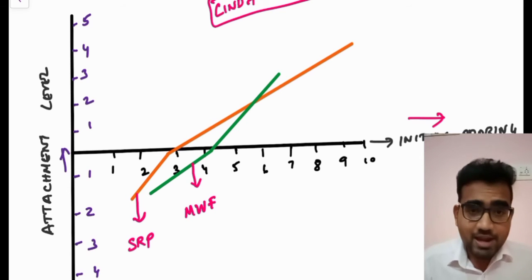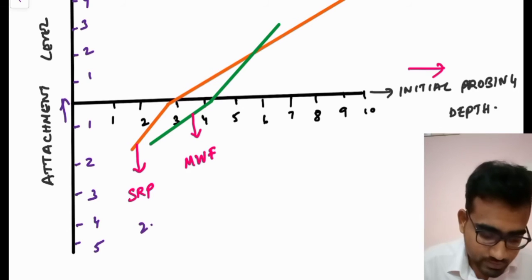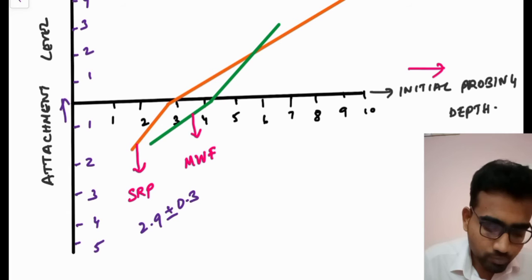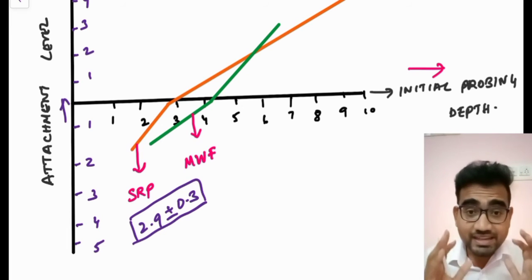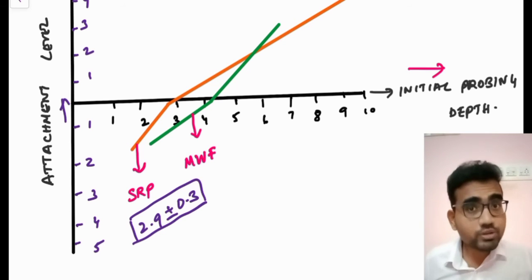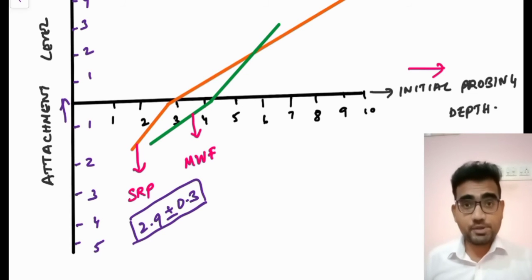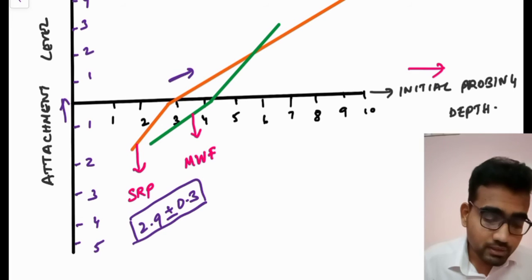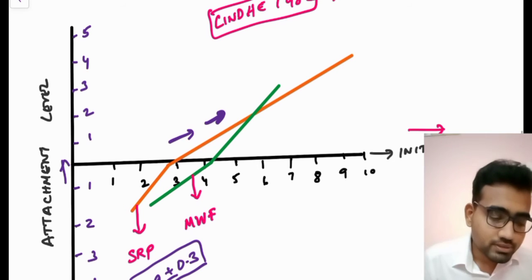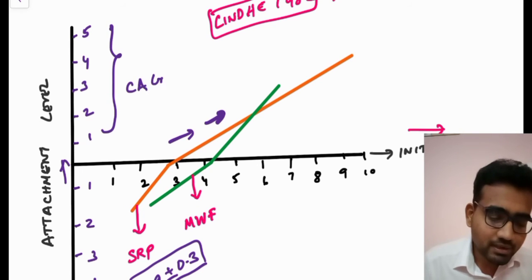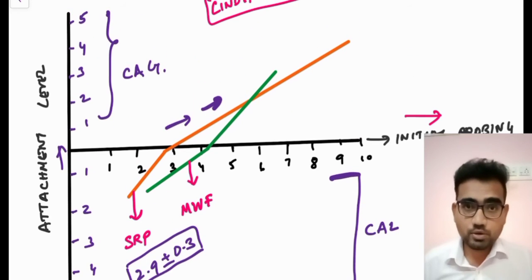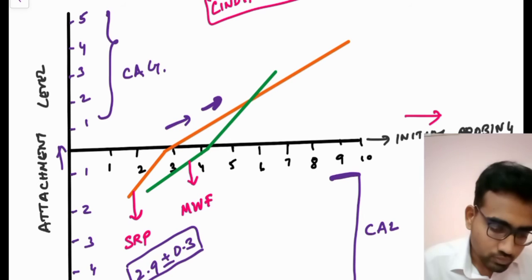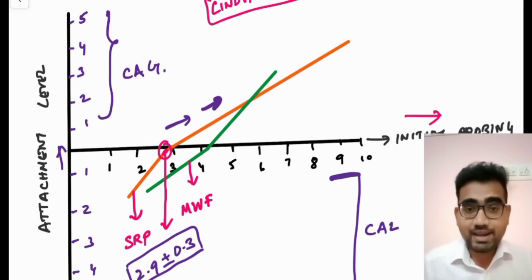The value for critical probing depth in case of SRP is 2.9 mm, with a variation of ±0.3. If a patient comes to you and you measure a probing depth of more than 2.9 mm, and you do scaling and root planing, that is going to result in clinical attachment gain — as you can see, it goes up on the graph. This upper portion is the clinical attachment gain and the lower portion is the clinical attachment loss.